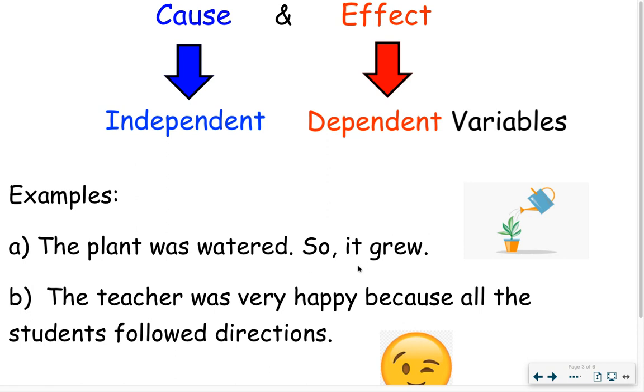Well, if I think about it, the plant grew as a result of it being watered or after it being watered. So being watered is the independent variable and then it growing is the dependent variable. It depended on the water.